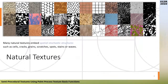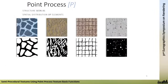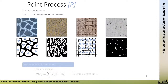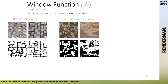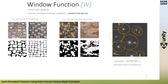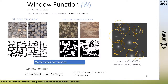Natural textures can be seen as embedding spatial stochastic structures such as cells, cracks, scratches, spots, stains, or waves, and they all share common characteristics. The first is that basic elements are distributed in space — for cells, we model the centroid as a feature point Xi, and mathematically it's a sum of Dirac impulses at each feature point. The second characteristic is that basic elements can be either localized in regions or contained in overlapping regions like mold or rust paint. The function is translated on each feature point Xi — mathematically, it's a convolution with the point process and window function.